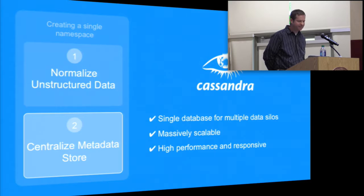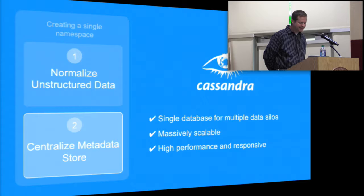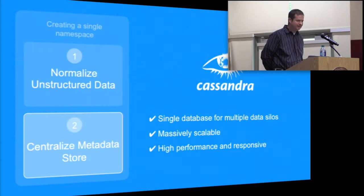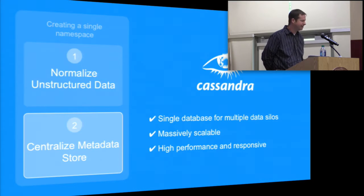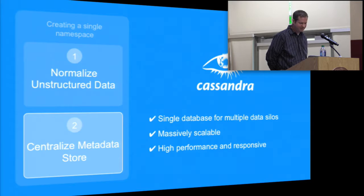The data is all encrypted at rest inside the Cassandra database. And we're able to quickly work with customers that have petabytes of data, in millions of files, that are now able to quickly search and get results back that are highly personalized in a very short period of time.